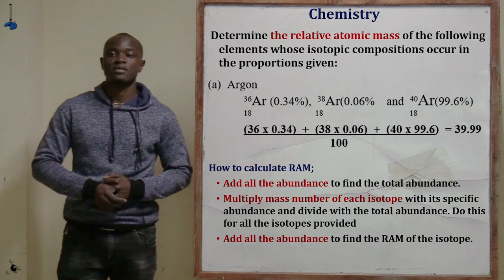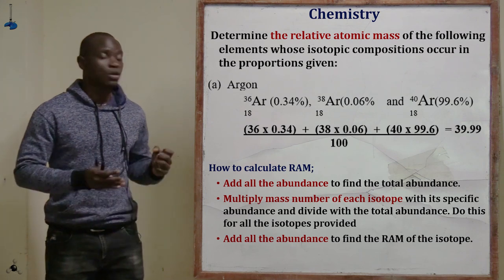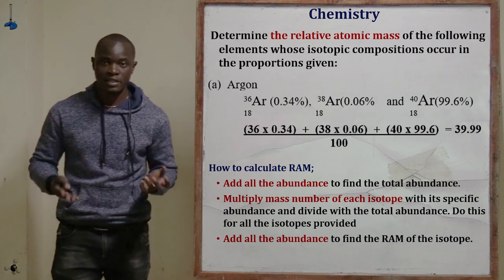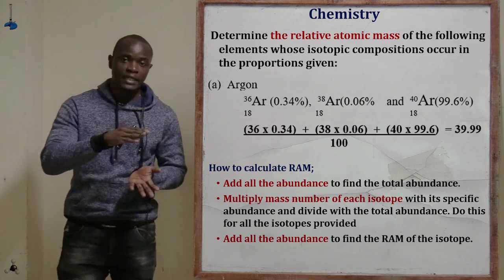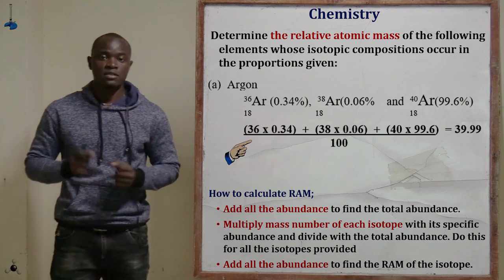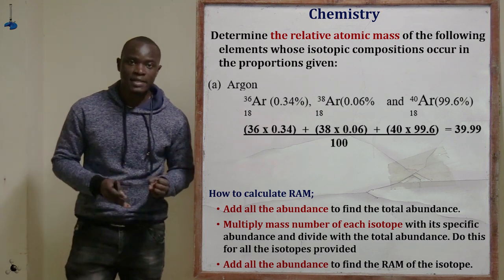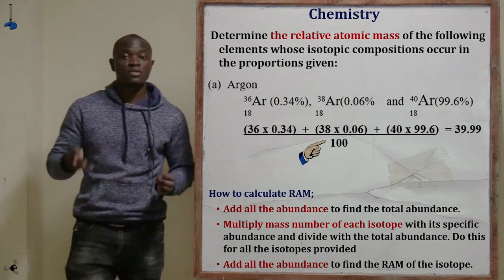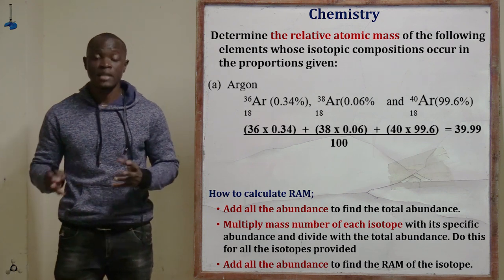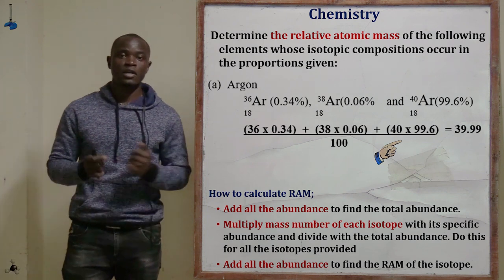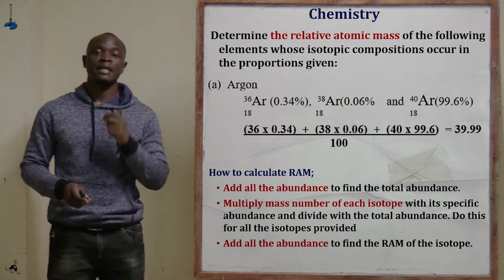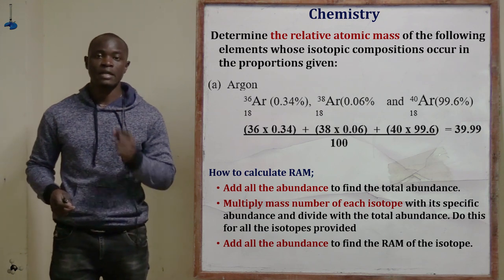To calculate the relative atomic mass of argon, we take each mass number multiplied by its abundance divided by 100, then add them together. So: (38 × 0.34)/100 + (39 × 0.06)/100 + (40 × 99.6)/100. Doing the calculations correctly, the relative atomic mass of argon is 39.9.